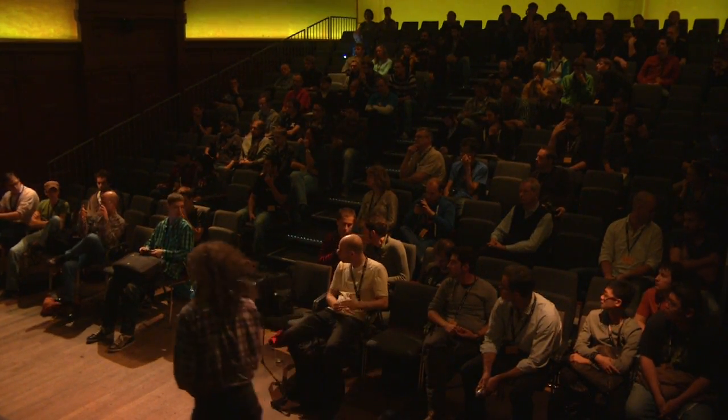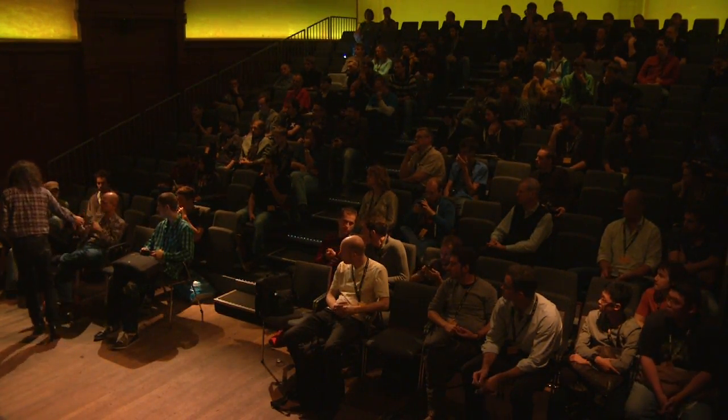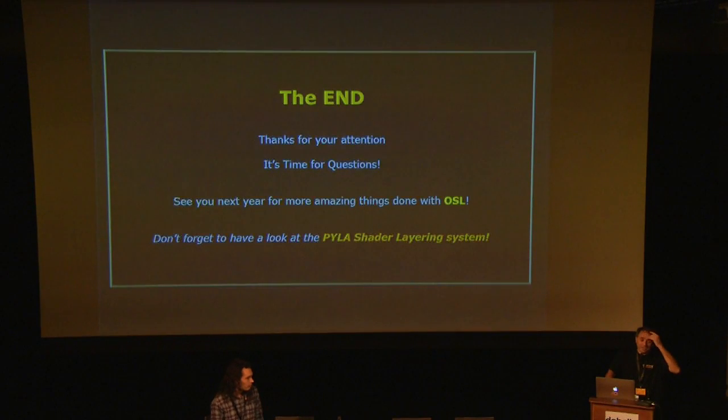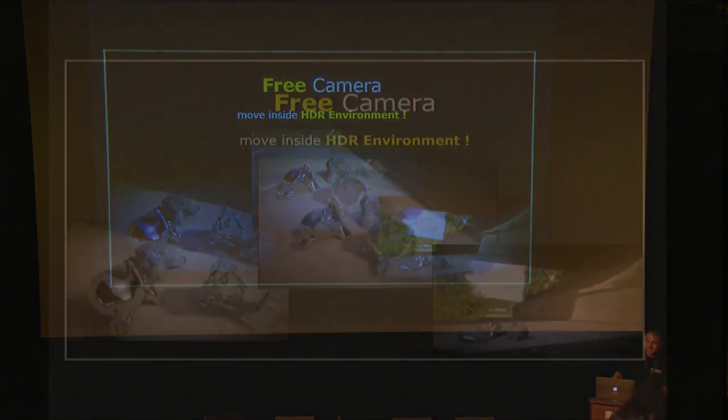Q: It starts by shooting all around and then stitching these into a 360? A: Yes. It starts by shooting all around. I use a Nikon SLR camera with a 10.5 millimeter fisheye lens. I make about 90 photos — nine points of view of 10 by cutting exposure — on a special tripod, and I use Gigapan to stitch the panoramas. All panoramas in this presentation are made by myself.